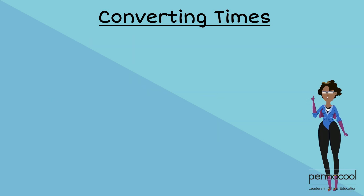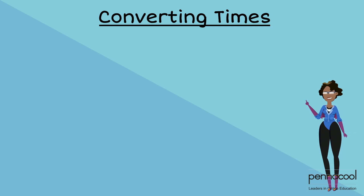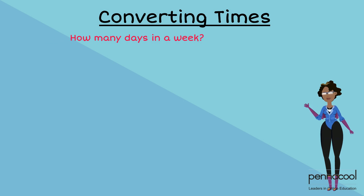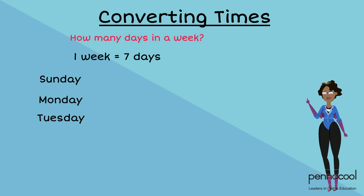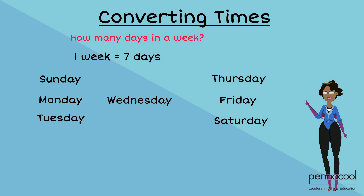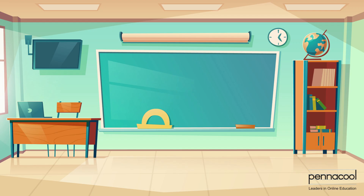Now that we can identify and calculate seconds, minutes, hours, as well as days, let's move on to how many days there are within one week. A week consists of seven days: Sunday, Monday, Tuesday, Wednesday, Thursday, Friday, and Saturday. On average, there are four weeks in one month.